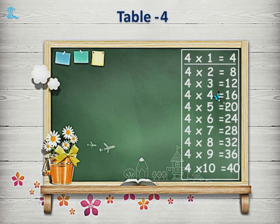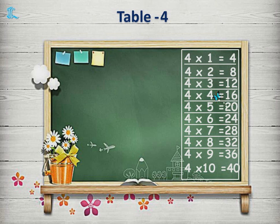4 1s are 4. 4 2s are 8. 4 3s are 12. 4 4s are 16. 4 5s are 20. 4 6s are 24. 4 7s are 28. 4 8s are 32. 4 9s are 36. 4 10s are 40.